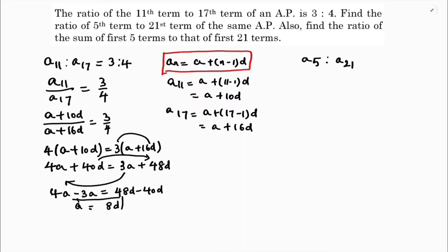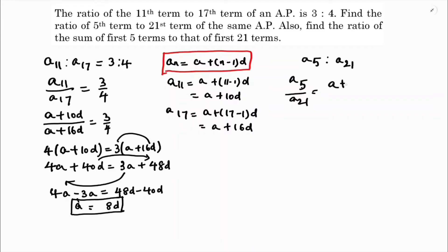So a equals 8d. The value of a is 8 times d. Now they are asking the ratio of a5, which is nothing but a plus 4d, to the 21st term. So a5 is a plus 4d and the 21st term is a plus 20d.